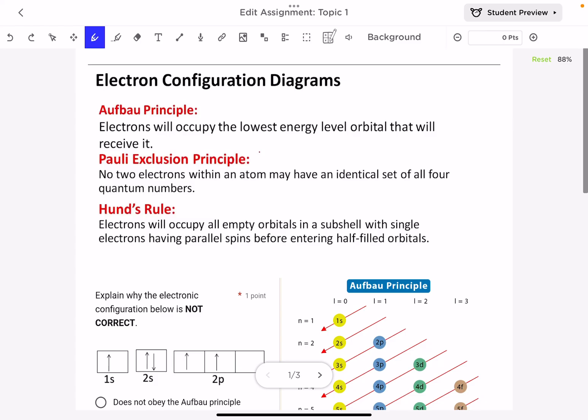In this video recording, I am going to explain the three rules to follow when writing an electron configuration. The first rule is the Aufbau principle. Electrons will occupy the lowest energy level orbital that will receive it.